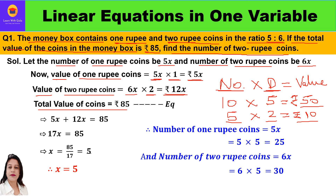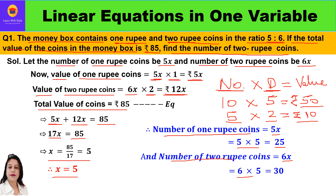The total value of coins means value of 1 rupee coins plus value of 2 rupee coins equals 85. So 5x plus 12x equals 17x, which equals 85. Therefore x equals 85 divided by 17, which equals 5. So the number of 1 rupee coins, which was 5x, is 5 into 5, which is 25.